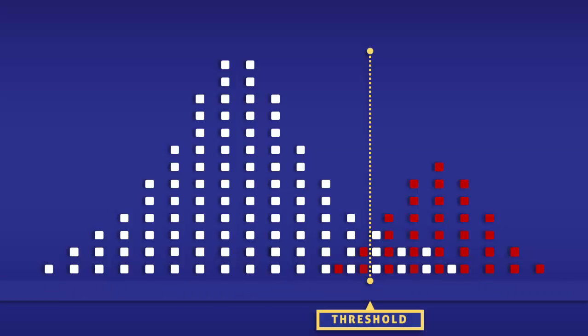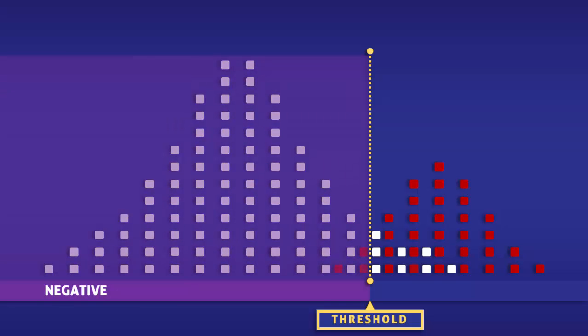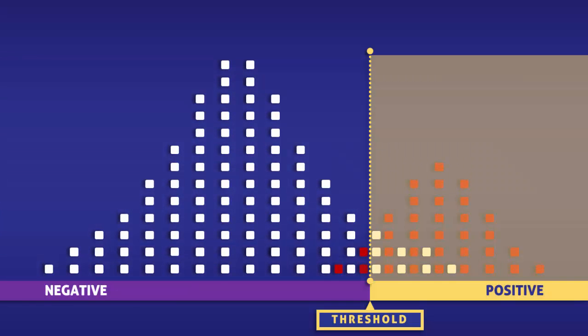This yellow line represents a cutoff level for a test. To the left of the line, the tests return negative, and to the right, they return positive.